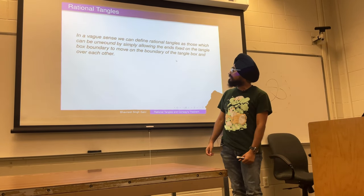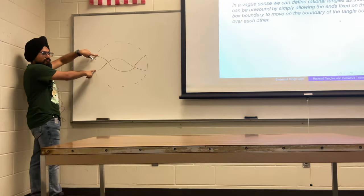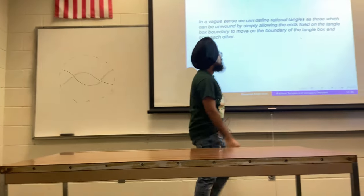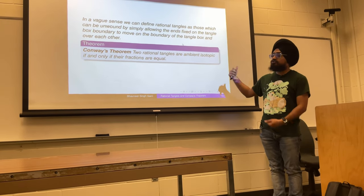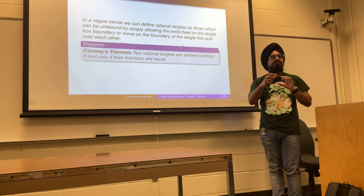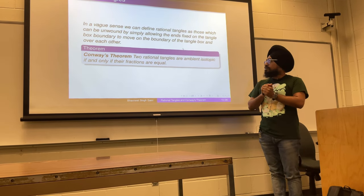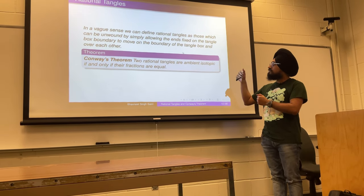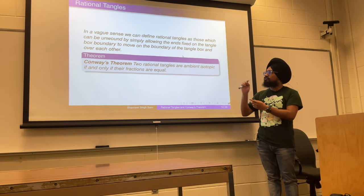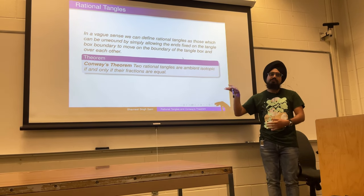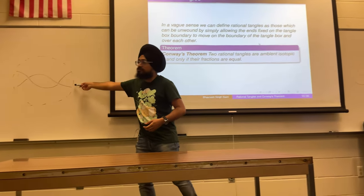In a weak sense, a rational tangle is something you can unwind if you are allowed to move all of the ends. Conway stated that two rational tangles are ambient isotopic if and only if their fractions are equal. We have not yet discussed what those fractions are, so now we will build up how to associate a fraction to a rational tangle.